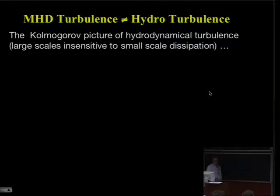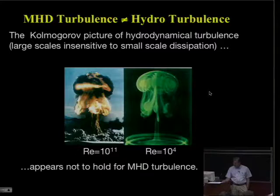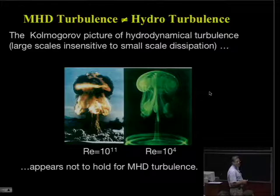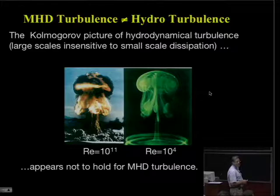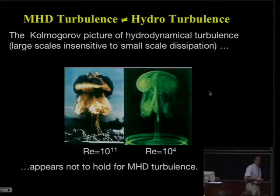We still don't know exactly what turns off the MRI. We would like to understand better how MRI fits into the general picture of field amplification and classical dynamo theory. We know now that the Kolmogorov picture of hydrodynamical turbulence with large scales being insensitive to small scale dissipation is not true for MHD turbulence.